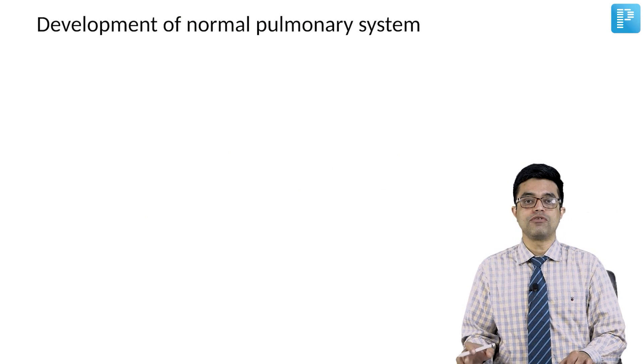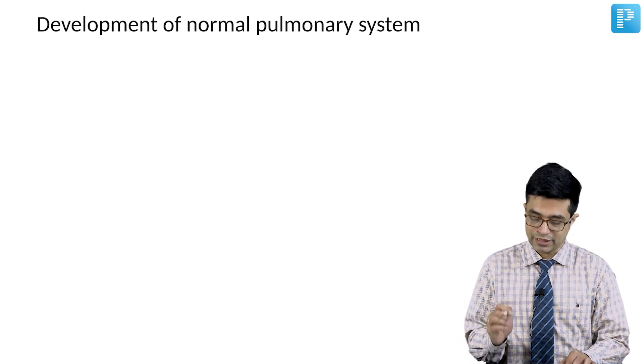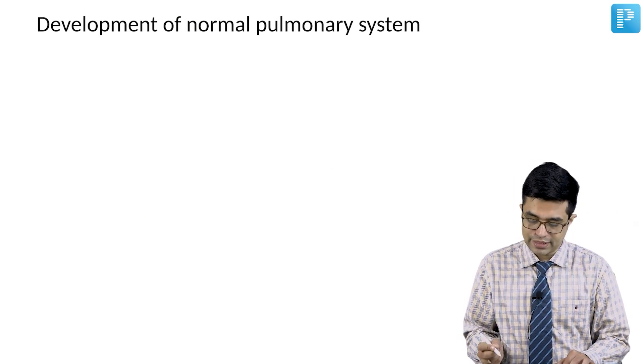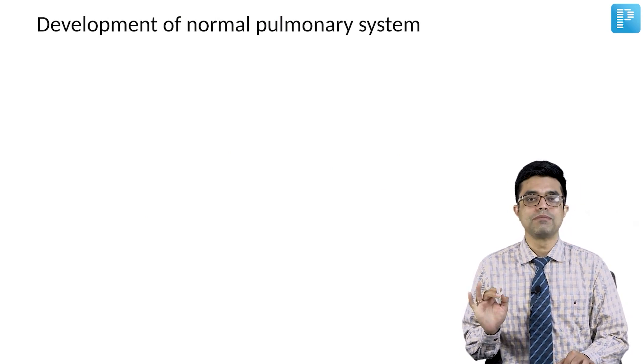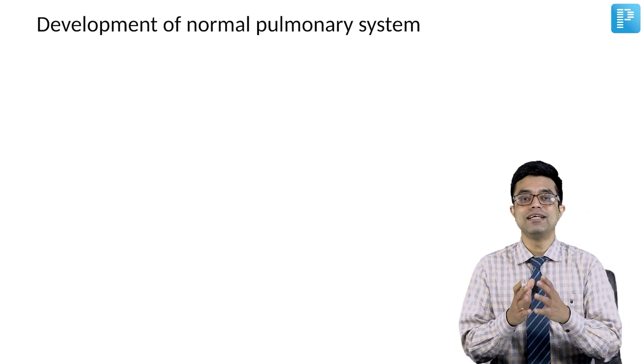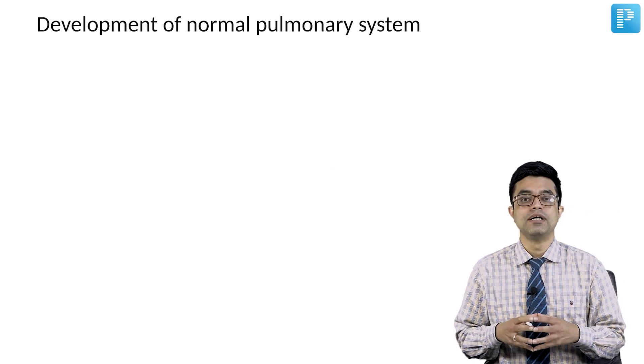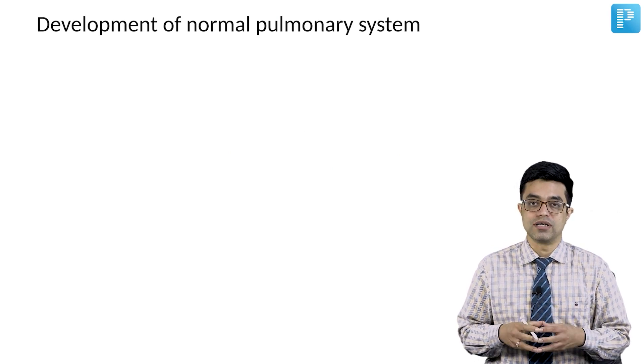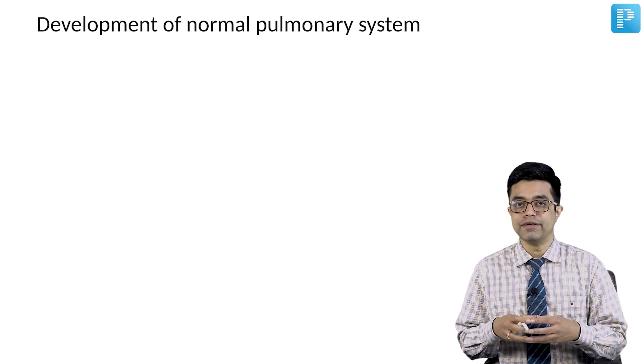Moving over to the development of the normal pulmonary system, you need to understand that the normal pulmonary system is mainly derived from the foregut. It is an endodermal derivative.